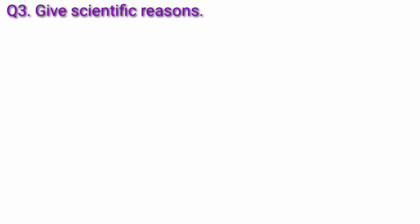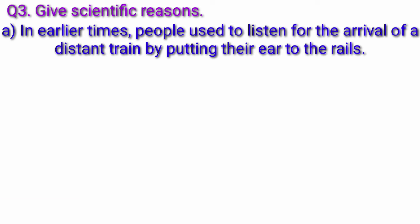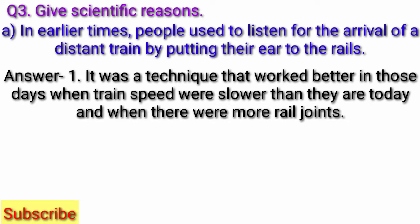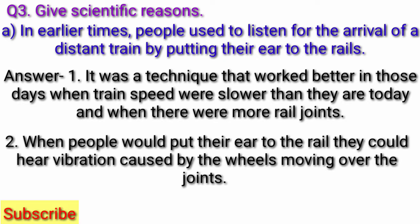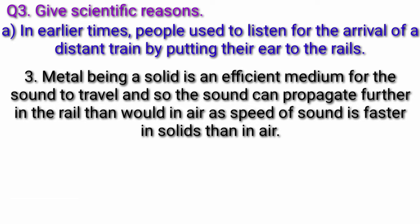Question 3: Give scientific reasons. Question A: In earlier times, people used to listen for the arrival of a distant train by putting their ear to the rails. Answer: It was a technique that worked better in those days when train speeds were slower and there were more chilled rail joints. When people put their ear to the rail, they could hear vibrations caused by the wheels moving over the joints.